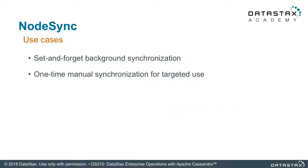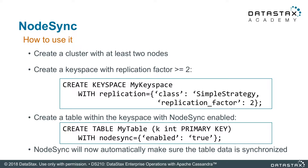So how does this work? When you create a keyspace on a table, you can add to the table information a `nodesync enabled` flag. This is a new parameter that you can add to a table either during the CREATE or ALTER TABLE statement. Either way, it's part of the parameters for the table. Once you have it set up, it will automatically synchronize that table throughout the cluster.